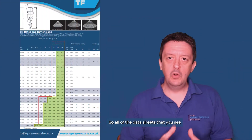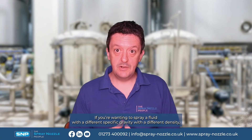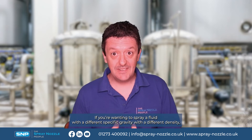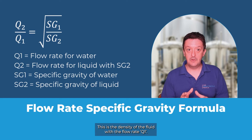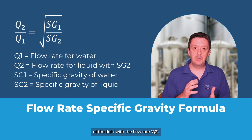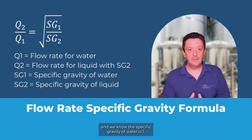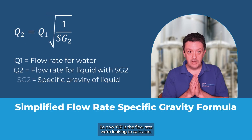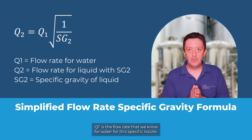The next factor that affects flow rate is the specific gravity of the fluid. All of the data sheets you'll see will have those flow rates calculated for water. If we want to spray a fluid with a different specific gravity — a different density — then we need to adjust those flow rates accordingly. This can be calculated using this formula, where SG1 is the specific gravity of the fluid with flow rate Q1, and SG2 is the specific gravity of the fluid with flow rate Q2. Since the specific gravity of water is 1, we can simplify this formula.